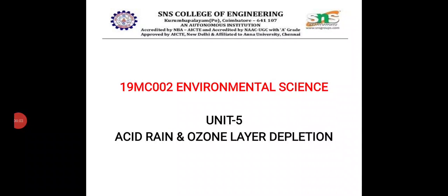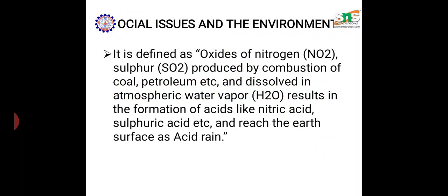In Unit 5, we are going to discuss acid rain and ozone layer depletion. Rainwater is supposed to be pure water with a pH of approximately 7, but due to atmospheric pollutants, the pH of rainwater goes below 6.5. Rainwater at a pH level of less than 6.5 is classified as acid rain.